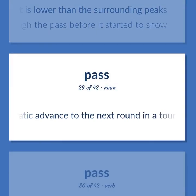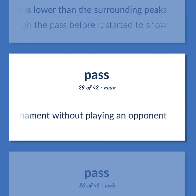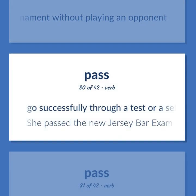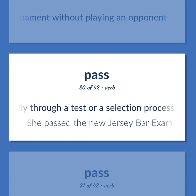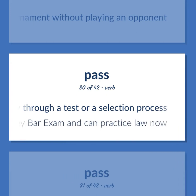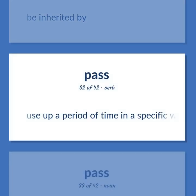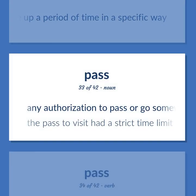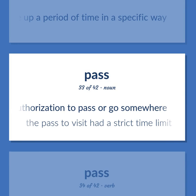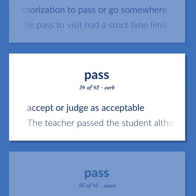An automatic advance to the next round in a tournament without playing an opponent. Go successfully through a test or a selection process — she passed the New Jersey bar exam and can practice law now. Be inherited by. Use up a period of time in a specific way. Any authorization to pass or go somewhere — the pass to visit had a strict time limit. Accept or judge as acceptable — the teacher passed the student although he was weak.